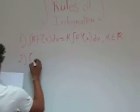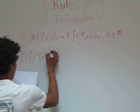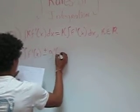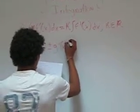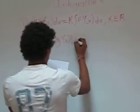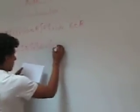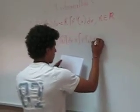The second rule is called the sum rule. This rule tells us that if we have the integral of f prime of x plus g prime of x, this is equal to the integral of f prime of x dx plus the integral of g prime of x dx.